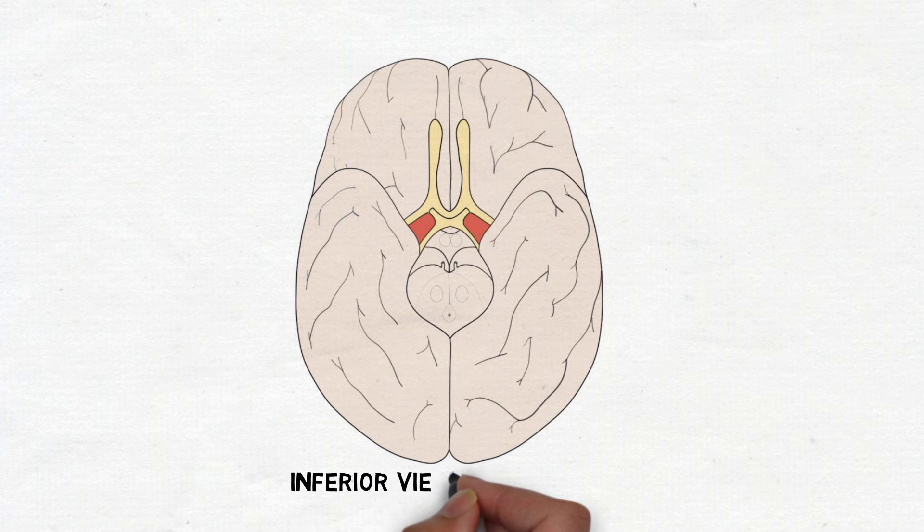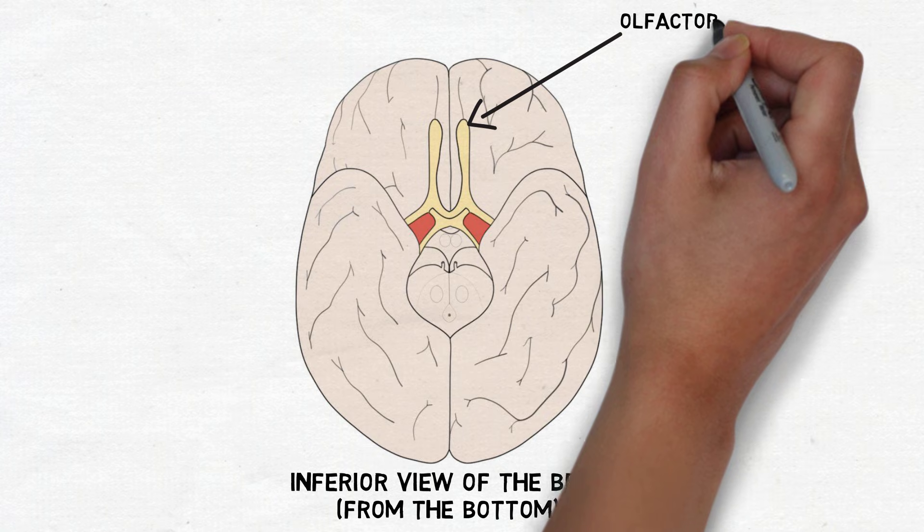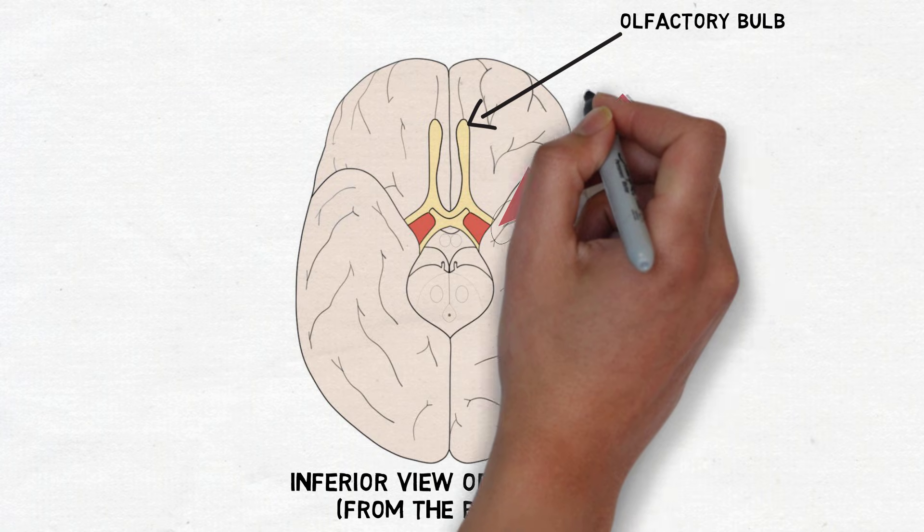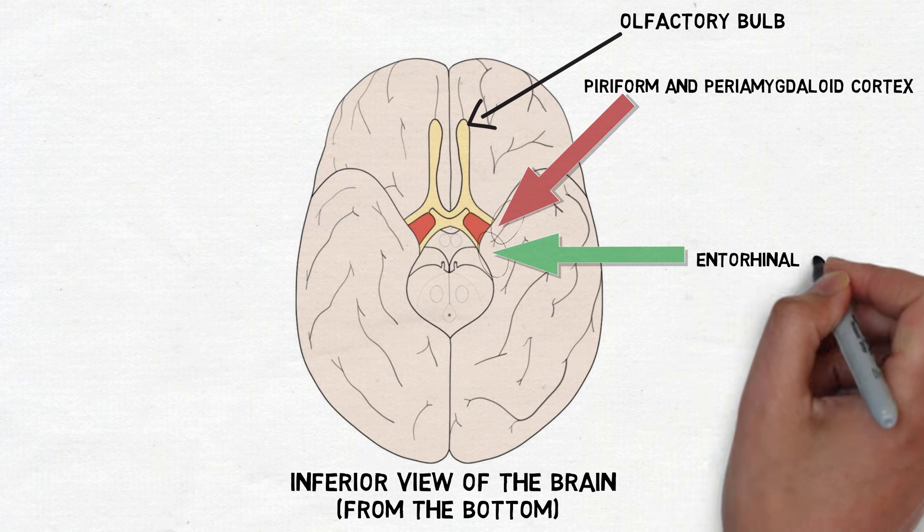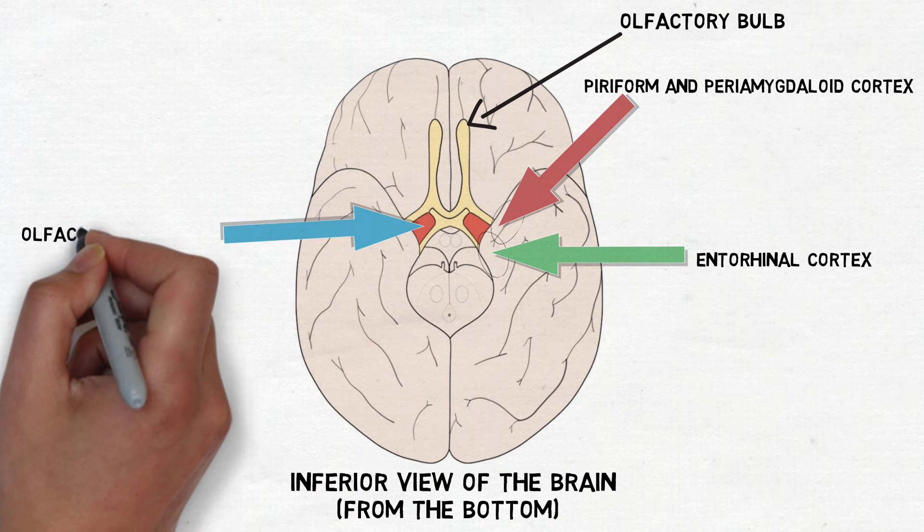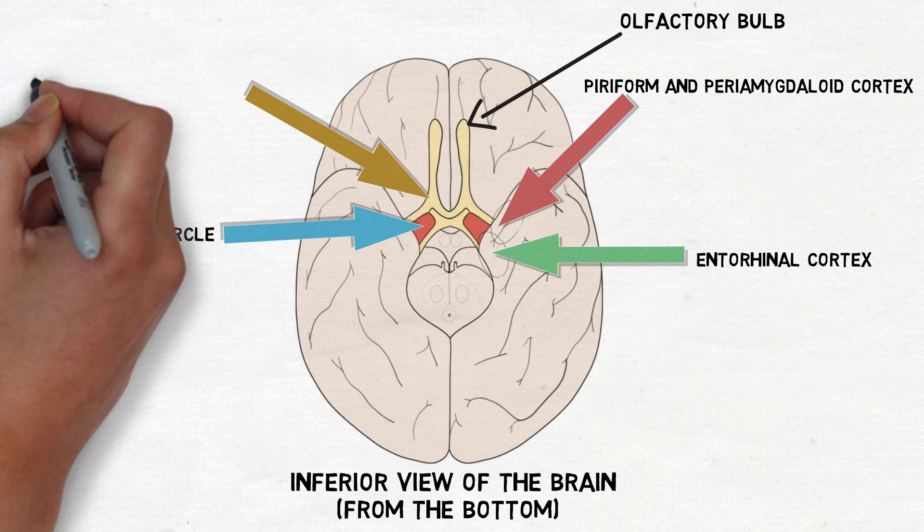The olfactory cortex consists of a collection of cortical areas that receive information from the olfactory bulb, including the piriform cortex, an area of cortex surrounding the amygdala cortex also known as the periamygdala cortex, the entorhinal cortex, and two regions known as the olfactory tubercle and anterior olfactory nucleus.